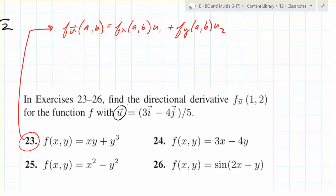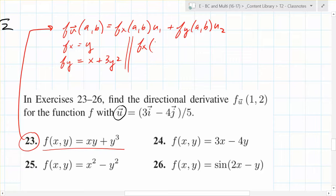So in terms of this definition here, though, what do we need to find now? f_x and f_y. Are these relatively straightforward to find? What's f_x in this case? Just y, right? What's f_y going to be? x plus 3y squared. Are we good with that? So what's f_x at the point (1,2)? 2. What's f_y at the point (1,2)? 13.